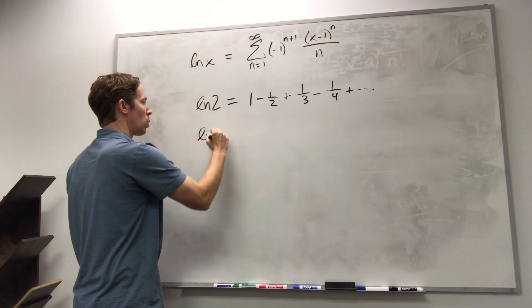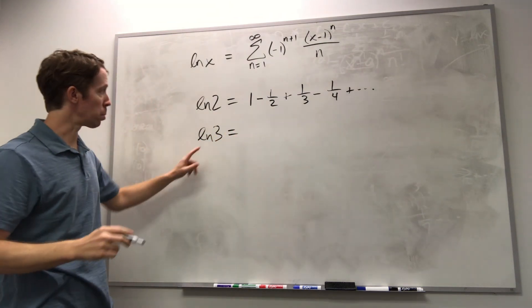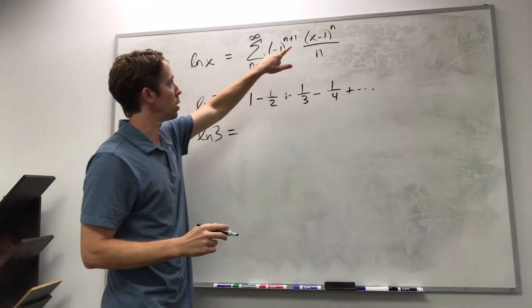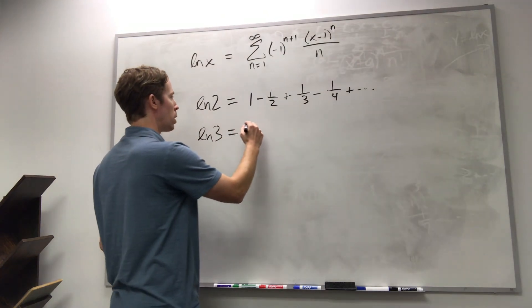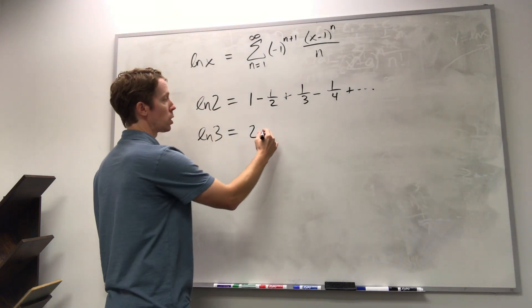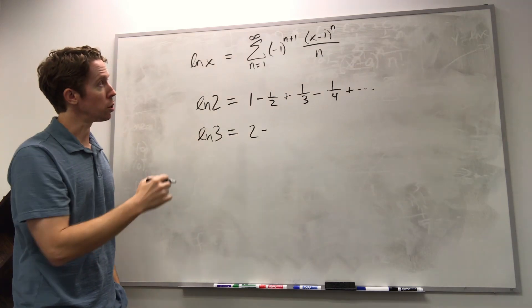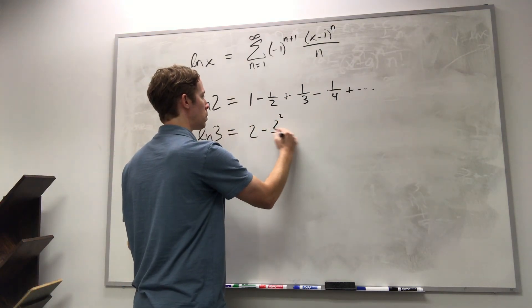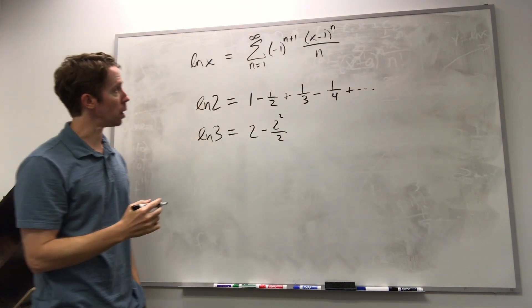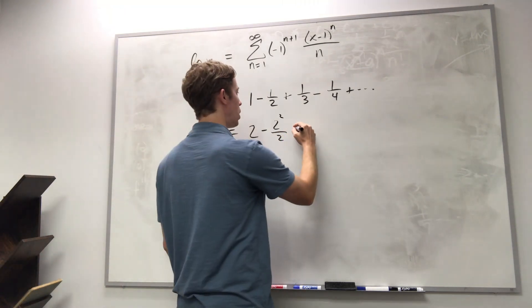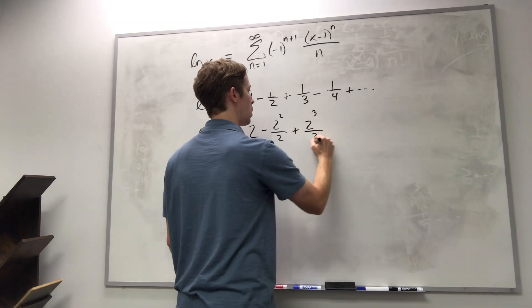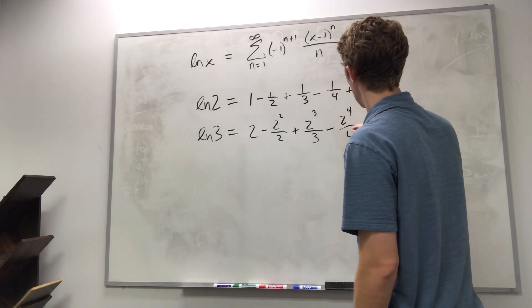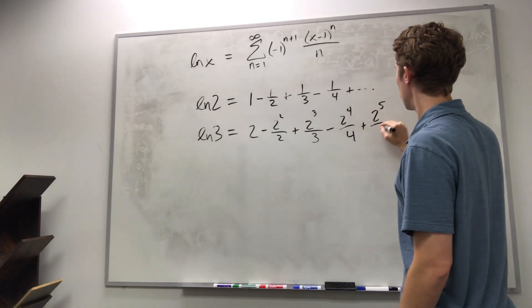Now, what happens if I look at natural log of three? If I plug in three for x, then for the first term I get a positive two over one. For the second term, I get a minus two squared over two. For the third term, I get a plus two cubed over three. And then this pattern keeps up, so minus two to the fourth over four, plus two to the fifth over five, and so on.